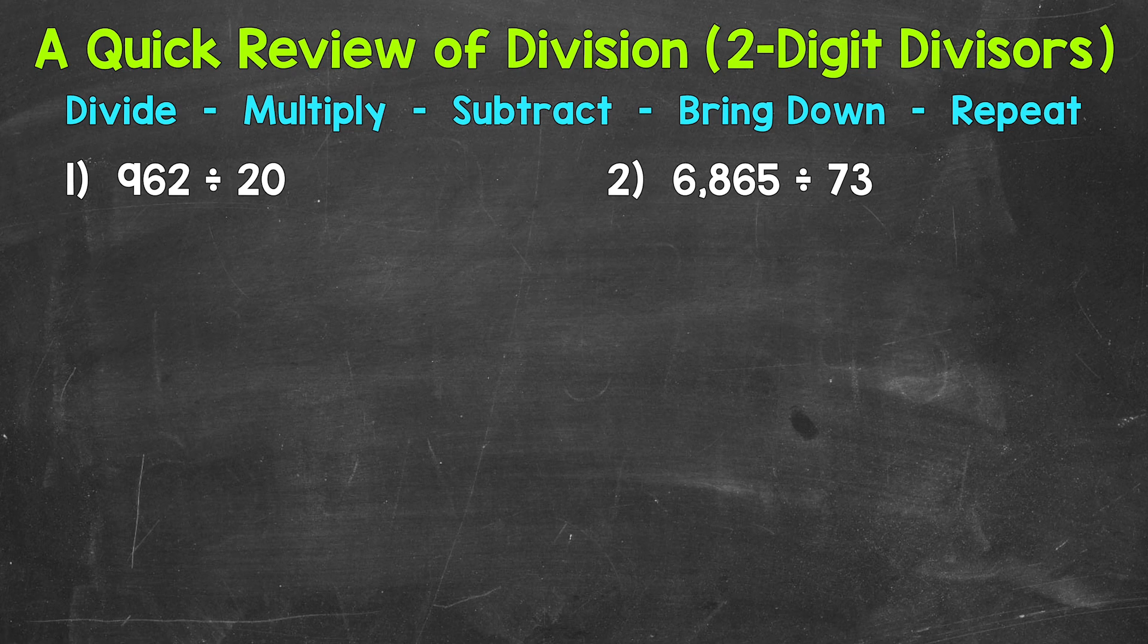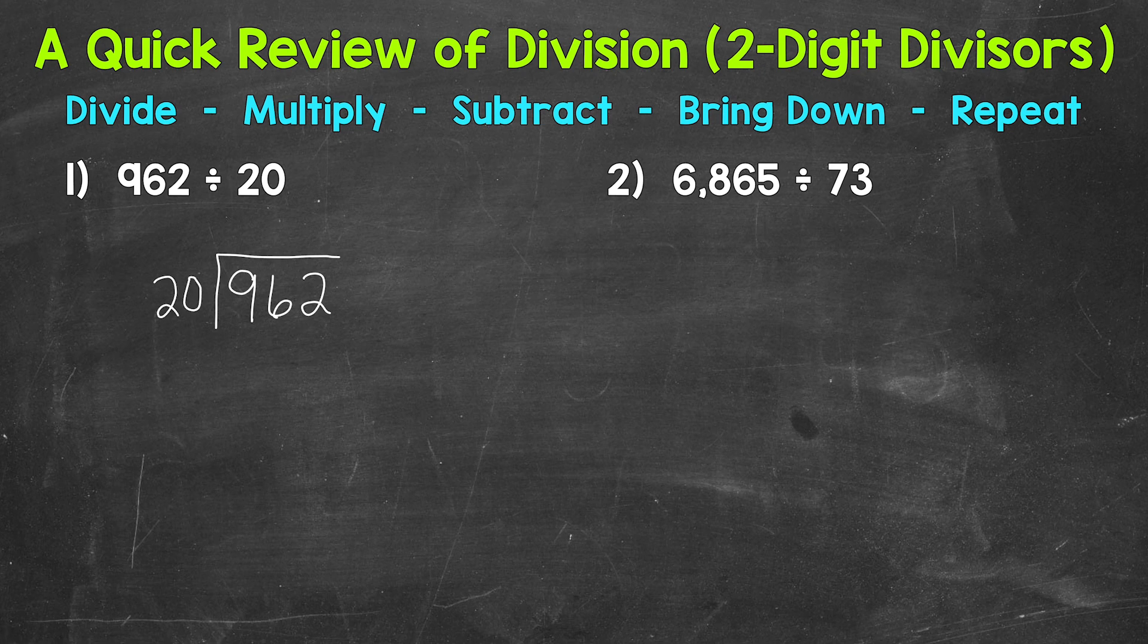Let's jump into number one, where we have 962 divided by 20. And the first thing that we're going to do, we're going to set this up. Now 962 is the number we are dividing. It's called the dividend. So it goes under the division bar. So we have 962 divided by, and then 20 is our divisor. It's the number we're dividing by.